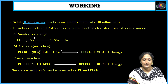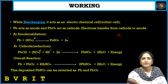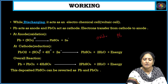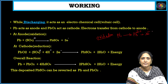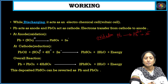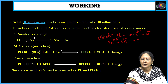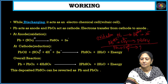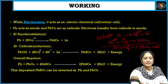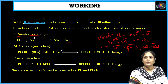While discharging, it acts as a voltaic cell, meaning chemical energy is converted into electrical energy. Pb acts as the anode and undergoes oxidation, liberating electrons: Pb forms Pb²⁺ plus 2 electrons. The Pb²⁺ released undergoes reaction with SO₄²⁻ to form PbSO₄. The overall anode reaction is: Pb + SO₄²⁻ → PbSO₄ + 2e⁻. So at the anode, oxidation takes place, liberating electrons and producing PbSO₄.